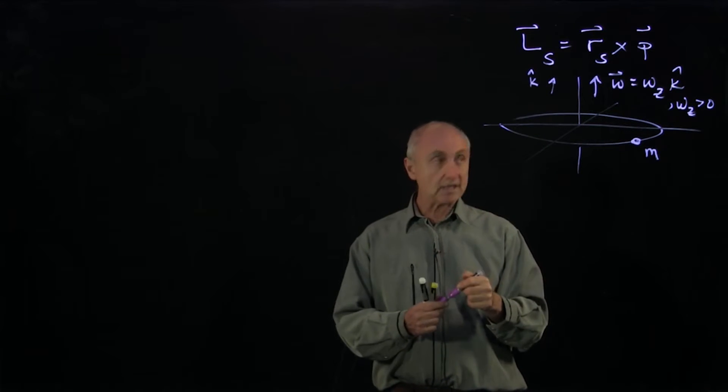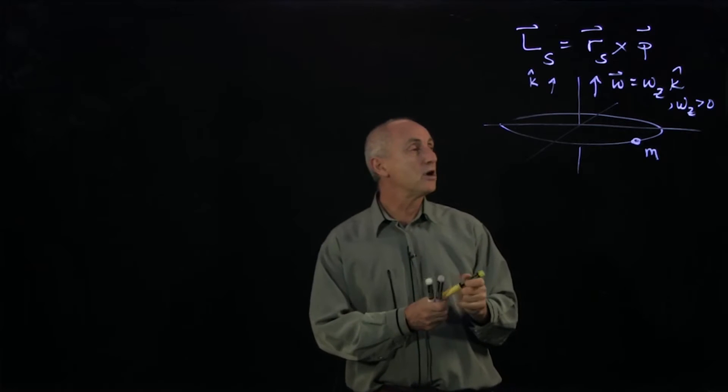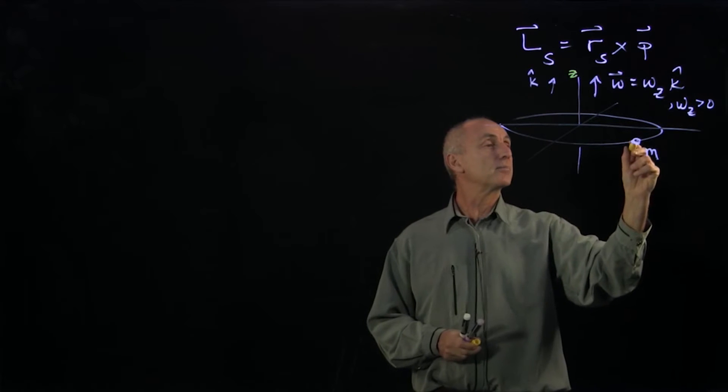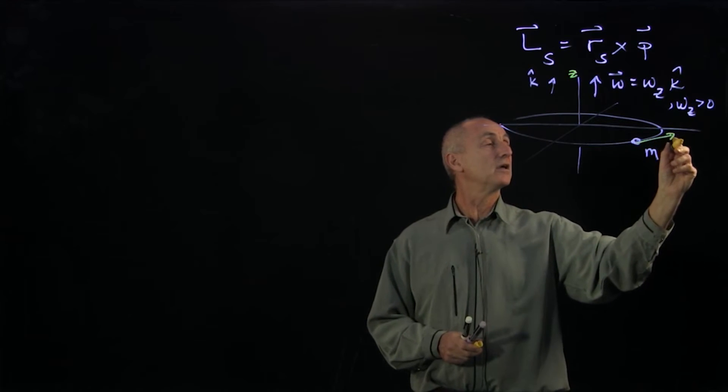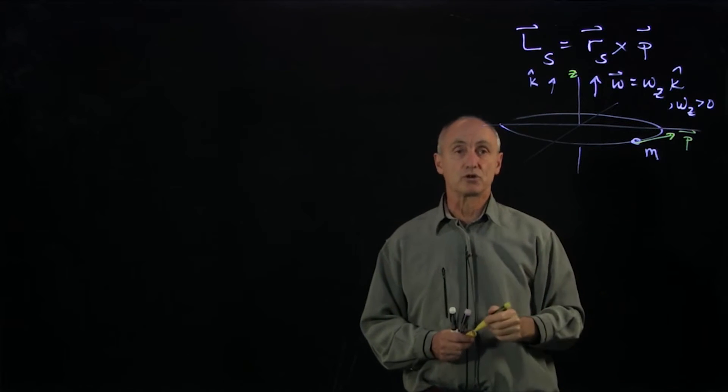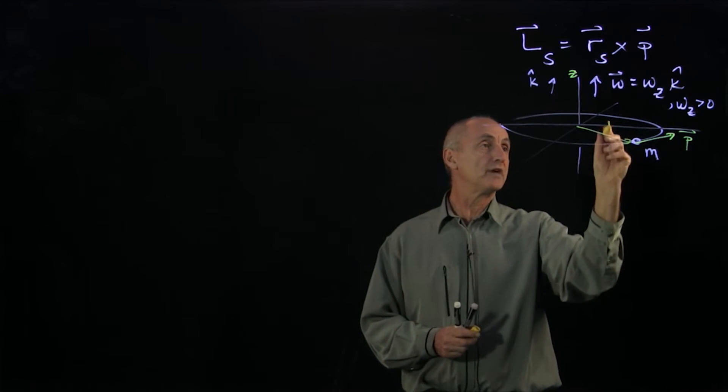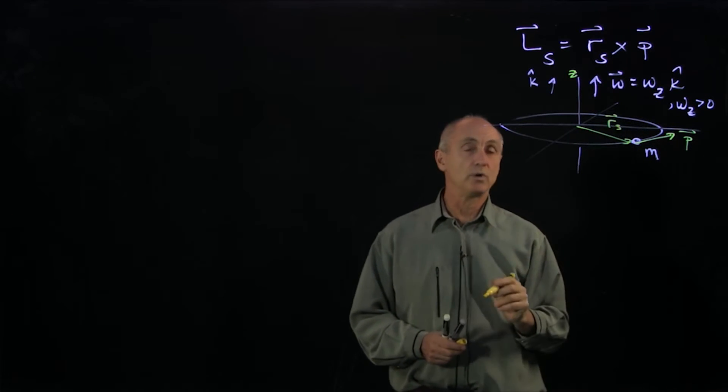Now when we calculate the angular momentum, we know because it's rotating about the z-axis, the particle has a velocity tangential to the circle. So its momentum is tangential to the circle, and we draw our vector r_s to where the object is.